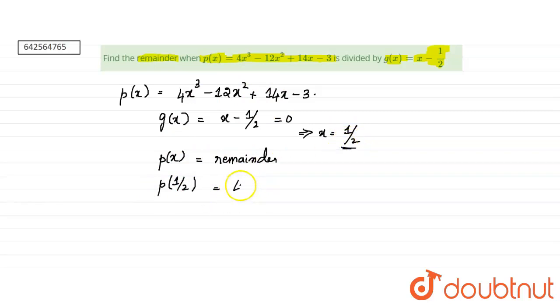So P of 1 by 2 is 4 into 1 by 2 whole cube minus 12 into 1 by 2 whole square plus 14 into 1 by 2 minus 3.